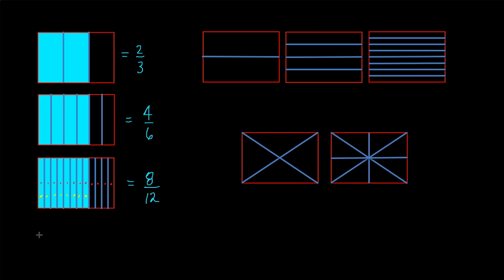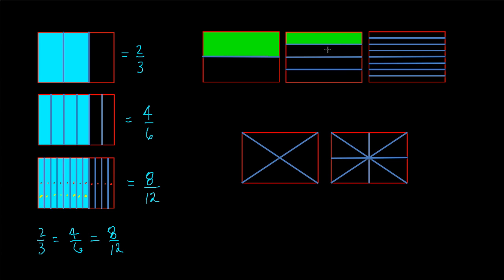Once again, we get the concept that two-thirds is equivalent to four over six, is equivalent to eight over twelve. We'll try this one. I will shade that, I will shade that and that, I will shade that, that, that, and that.